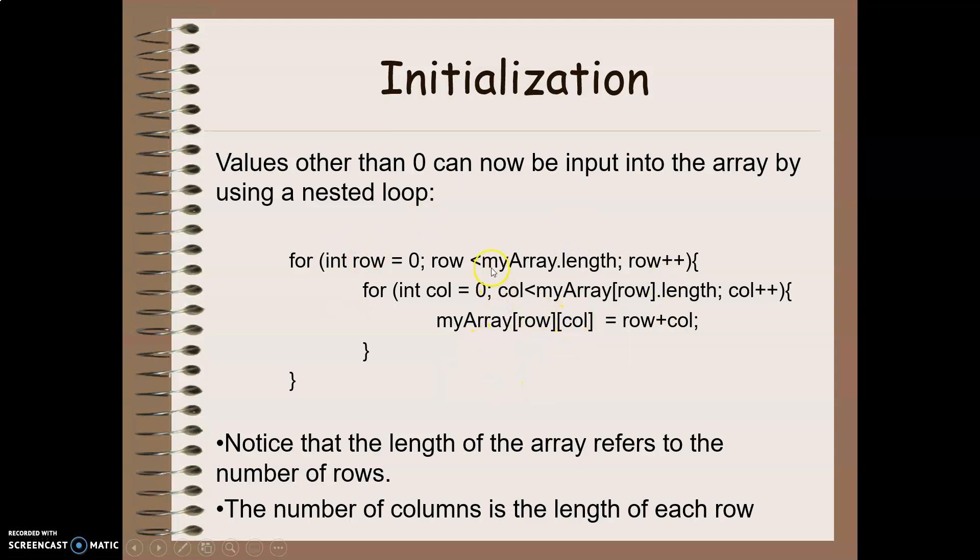A couple of things. Just like with one-dimensional arrays, the length is a property of the array. It is not a method. So I access it without using the parentheses because it's not a method, it is a property. And the length of a two-dimensional array represents how many rows there are. If I want to know how many columns there are in a particular row, I need to do that by using myArray[row].length. So I get an individual row and find the length of that array in the particular row.